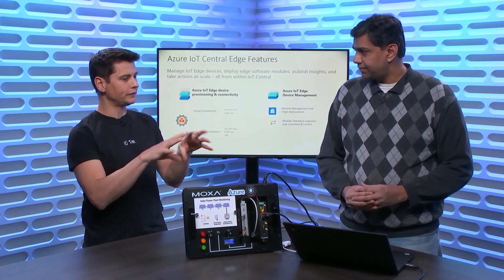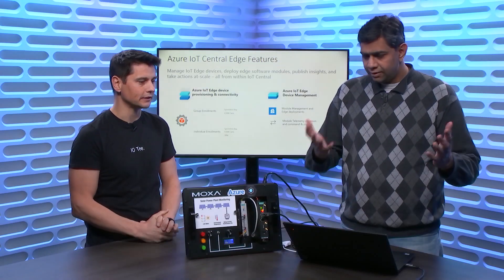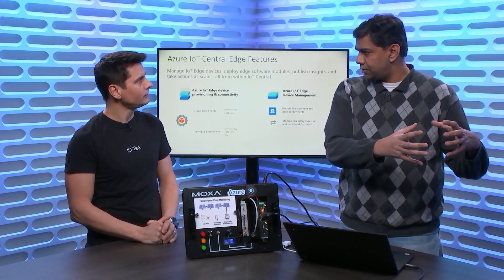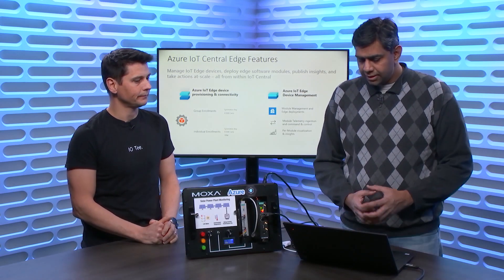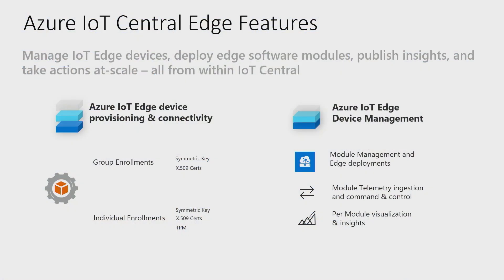You have a view of the Edge device but also a view of the modules running on it from IoT Central — essentially whatever view you'd see in IoT Edge shows up in IoT Central in real-time. Once you have modules deployed on the Edge, visualization, analytics, and the rules engine are all brought into Central as an end-to-end solution. We'll go through setting up a rule and taking an action.